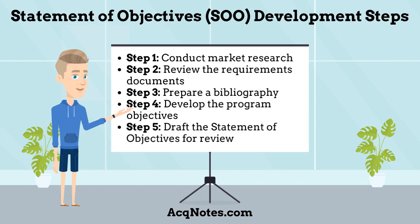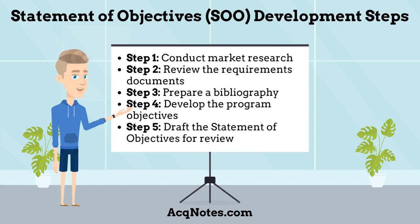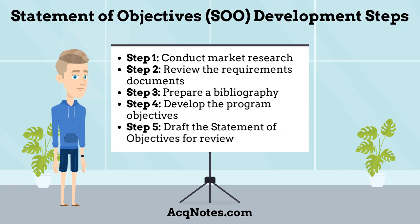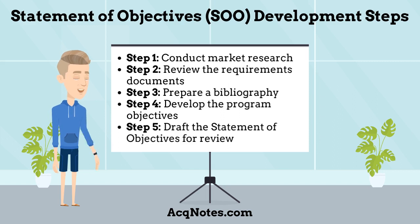What are the Statement of Objectives Development Steps? The following are the five steps that are an integral part of developing the SOO. Step 1: Conduct market research to determine whether commercial items or non-developmental items are available to meet program requirements. Step 2: Review the requirements documents that authorize the program — various DOD, services, and joint services requirements documents — for program management and acquisition management impacts to the program.